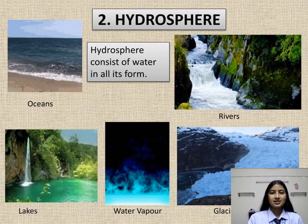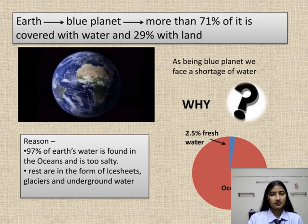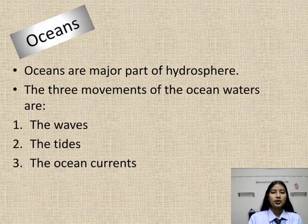The hydrosphere consists of water in all its forms — oceans, rivers, lakes, glaciers, and waterways. Earth is called the blue planet because it consists of 71% water and 29% land. Oceans are the major part of the hydrosphere.